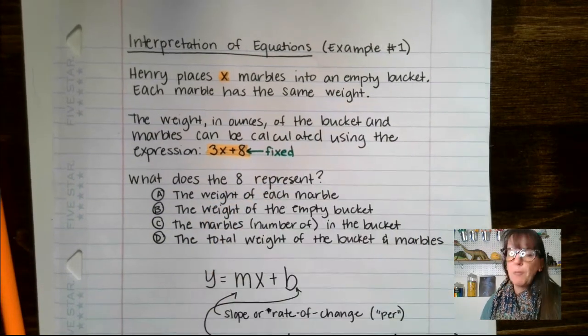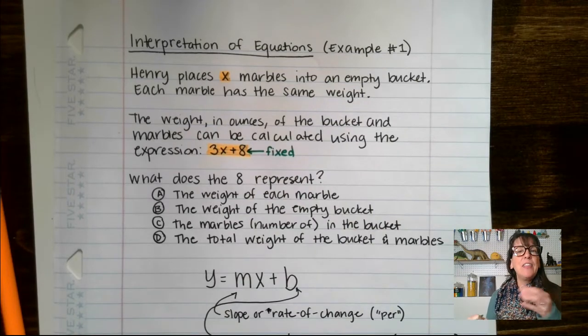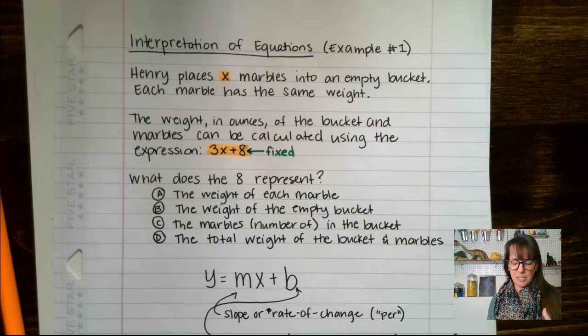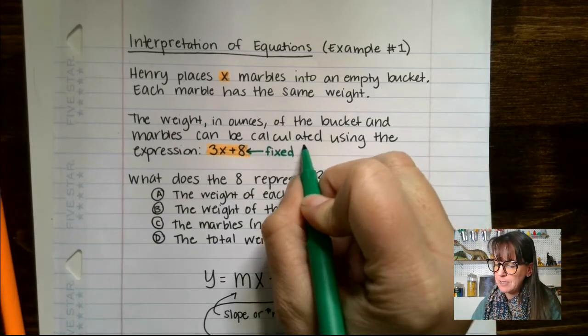That means that this guy is going to be our fixed amount. And if we consider the marbles, the bucket and all of that, that's going to be the bucket. The bucket's not changing. The weight of the bucket itself does not change. So that's going to be our fixed amount, our bucket.